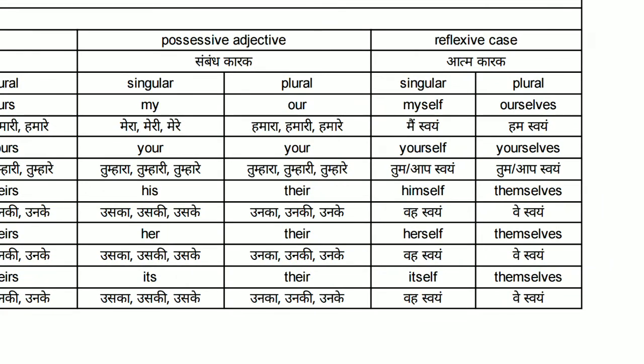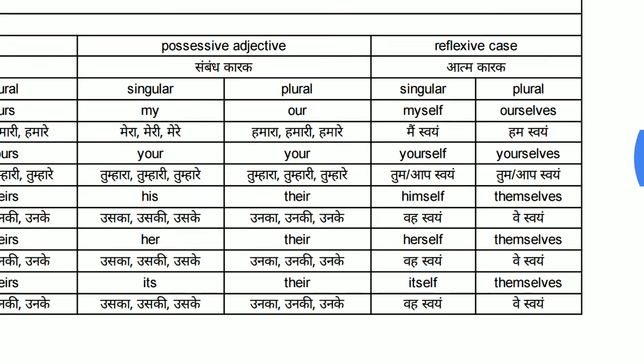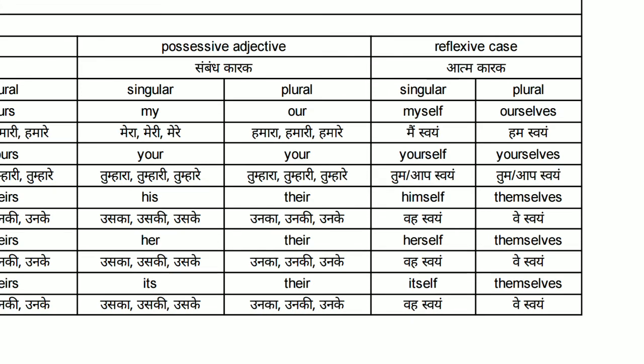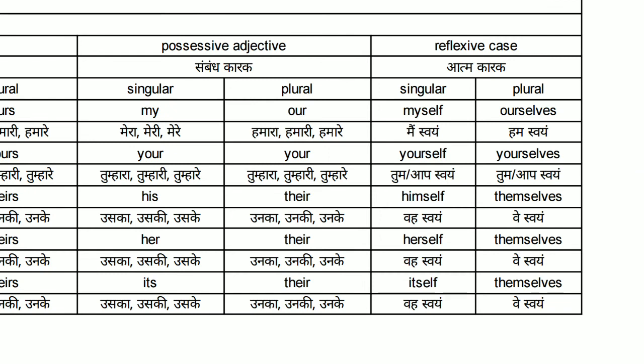Now here comes the reflexive case — Nijvachak Sarvnaam, Ya Atmakarak. First person singular: Myself; plural: Ourselves. Second person singular: Yourself; plural: Yourselves. For example: Main svayam yah kaam karta hun — I do this work myself. I myself do this work. Third person masculine gender singular: Himself. Feminine gender singular: Herself. Neuter gender singular: Itself. Whereas the plural for all three genders is Themselves. He does his work himself. They do their work themselves.